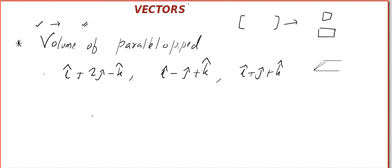It is very easy. The first thing to do is you give them names. Call it A, B and C. Now, what will be the required volume? Volume will be STP, the scalar triple product of ABC.